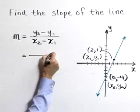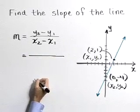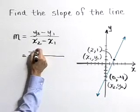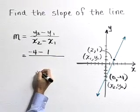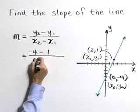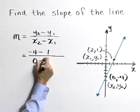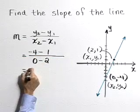Now let's substitute and simplify. y2 is -4 minus y1, which is 1. In the denominator, x2 is 0 minus x1, which is 2.